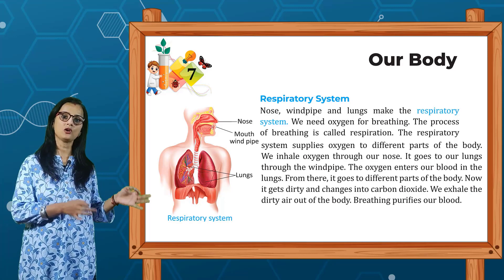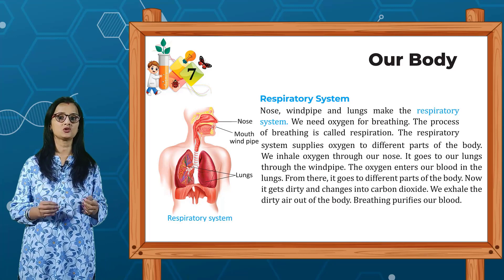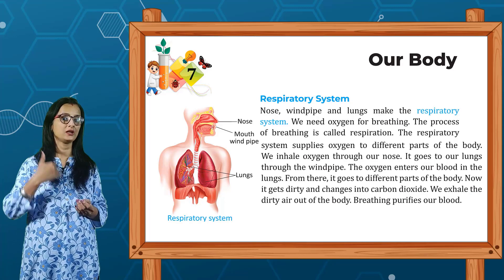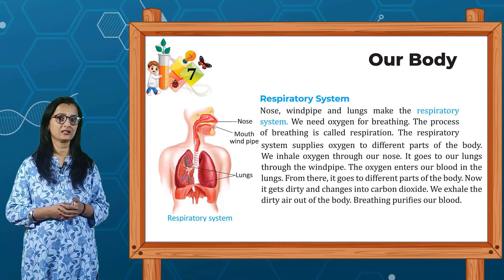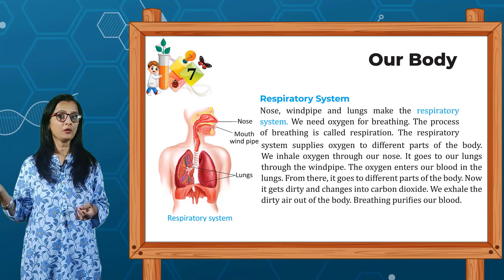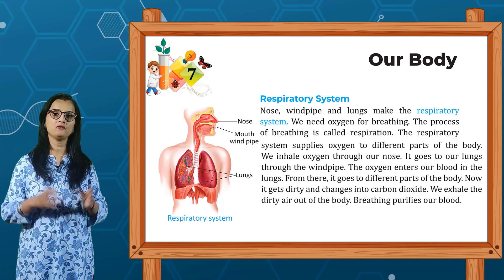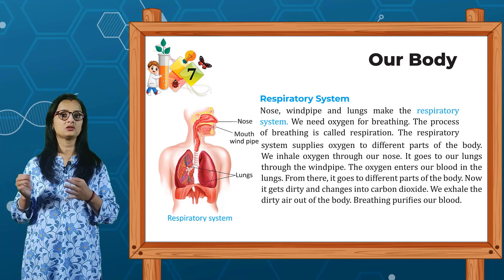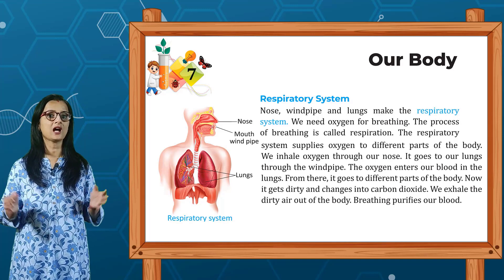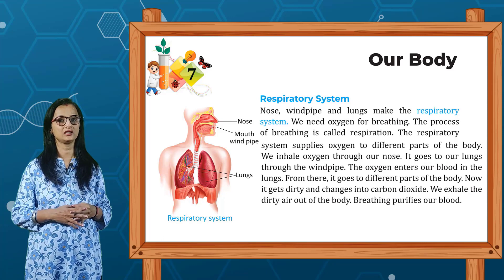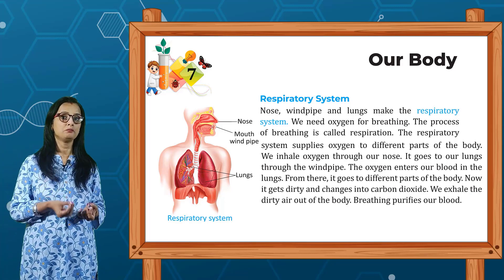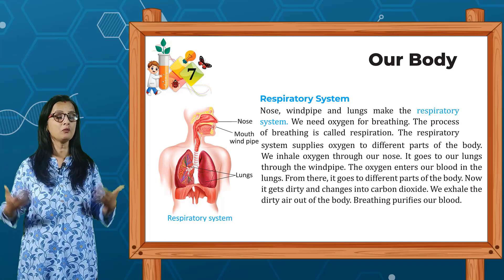The respiratory system supplies oxygen to the different parts of the body. We inhale oxygen through our nose; it goes to our lungs through the windpipe. The oxygen enters our blood in the lungs and from there it goes to the different parts of the body. Then the air becomes dirty and changes into carbon dioxide, which we exhale out of the body. Breathing purifies our blood.